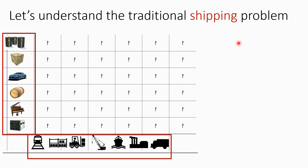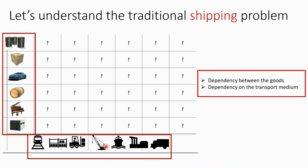Let's understand the traditional shipping problem. Let's forget about software for a moment and concentrate on a traditional shipping problem of goods. Let's say I have some materials to ship from one place to another — electronic equipment, piano, beer barrels, a car, some general materials, explosives, etc. To transport this material I have a number of transport mediums available like cranes, trains, waterways, buses, trucks, etc.